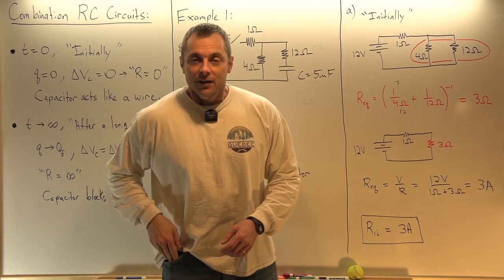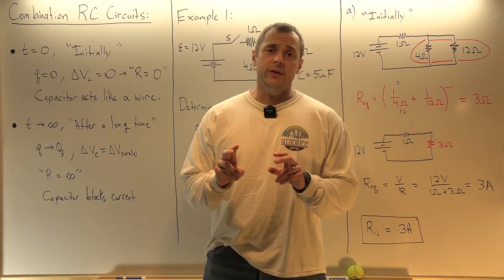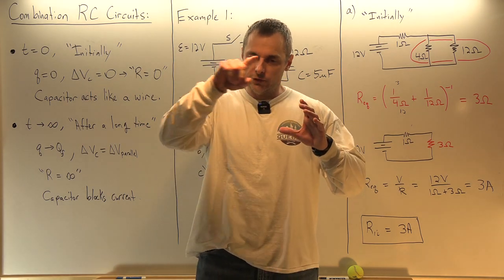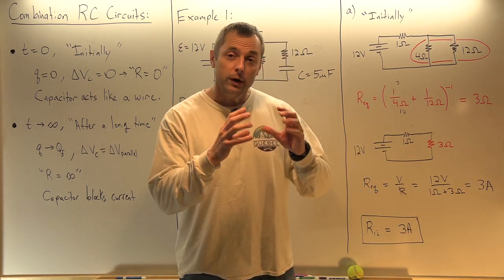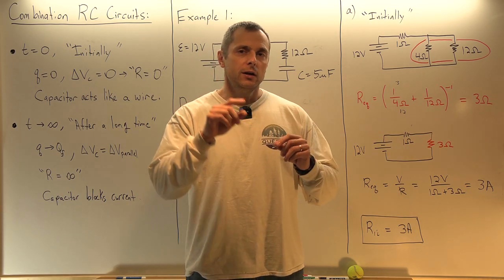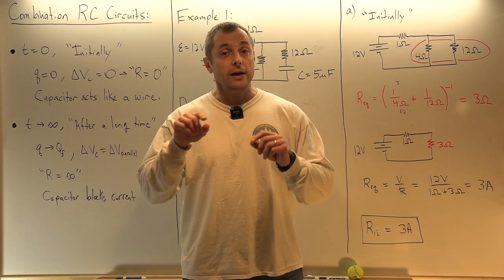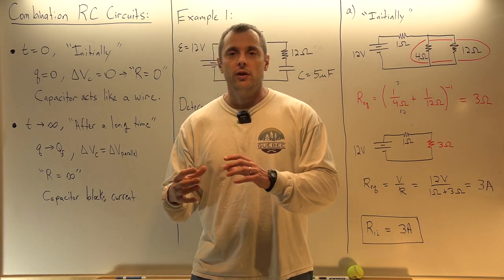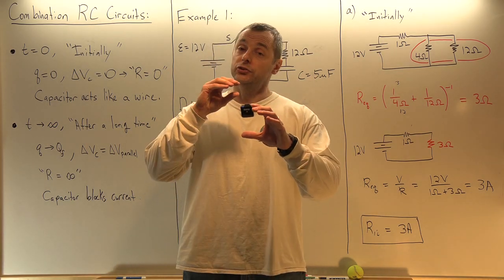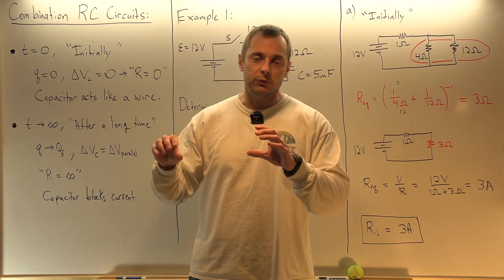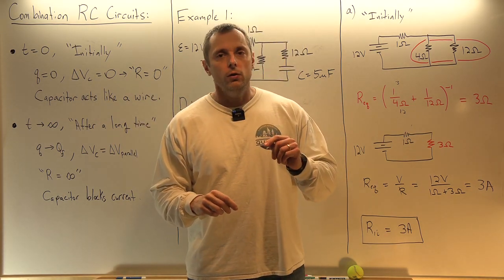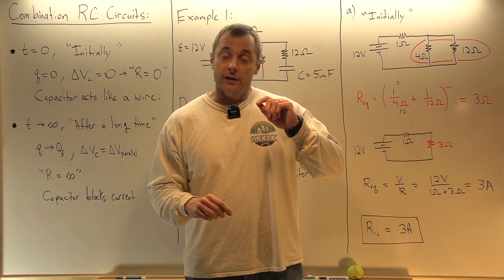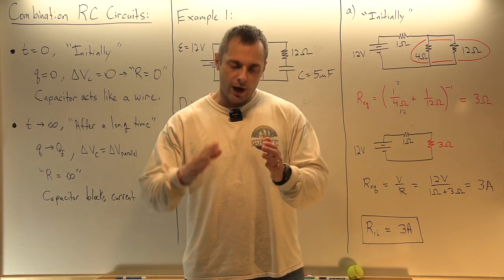Hello physics students. In the last two videos, we studied simple circuits that were just a single loop — in one case, a battery, a switch, a resistor, and an initially uncharged capacitor, and then in another case a single loop of a charged capacitor, a switch, and a resistor. The goal throughout was to find the charge on the capacitor and the current in the circuit for all time.